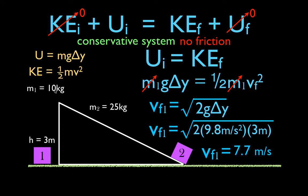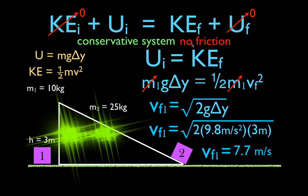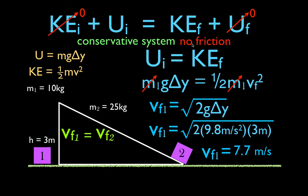The final velocity of each object is independent of its mass. This is only true for the object on the ramp because there's no friction — if there were friction, their velocities would not be equal. In this case, the final velocity of object one equals the final velocity of object two. It's also interesting that the time it takes object one to fall 3 meters is less than the time for object two to slide down the ramp. The accelerations are different, but the final velocities are the same: object two accelerates at a lower rate but for a greater amount of time.